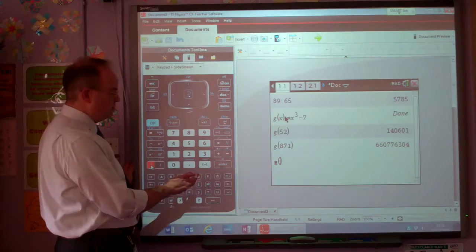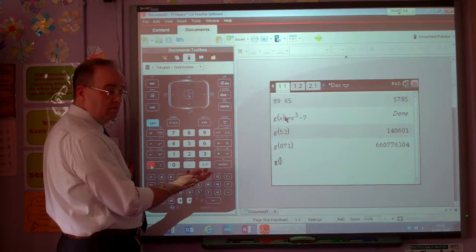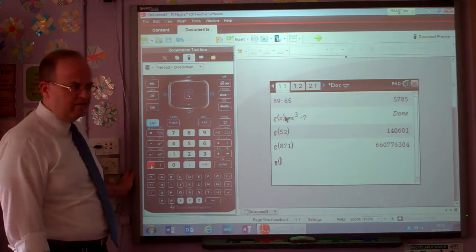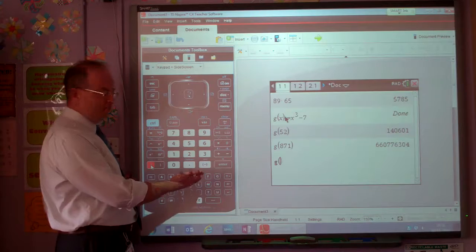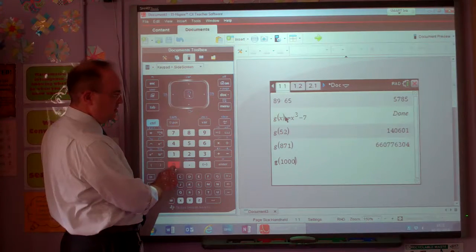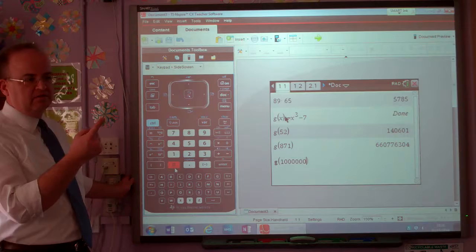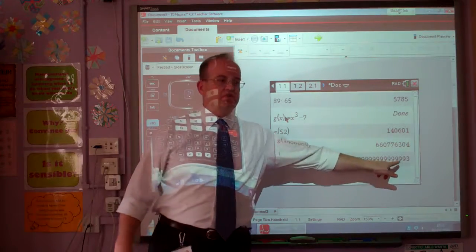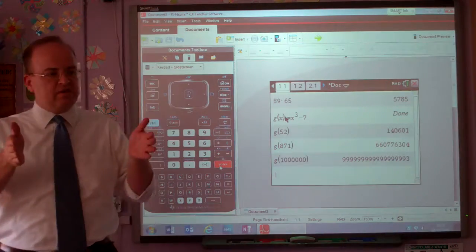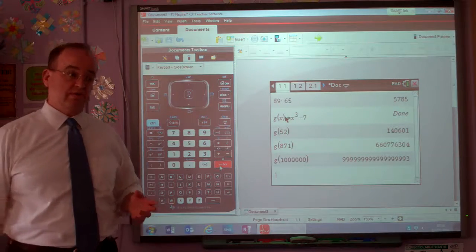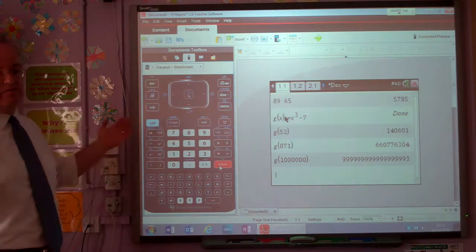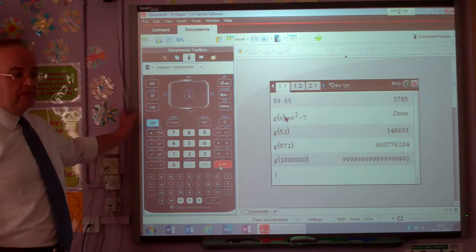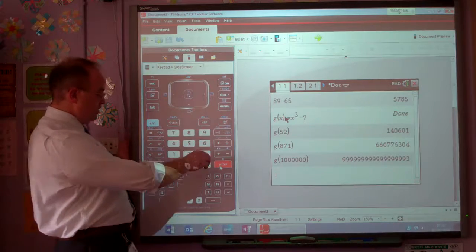Let's keep going. G of, even bigger number. Can I imagine 98? Come on, bigger than that. Still in the thousands. A million. So it's going to do a million to the 3 minus 7. Now notice it gives you all the digits. This calculator doesn't give you 9 digits or 10 digits and round off. It actually gives you all the digits, which is rather nice.